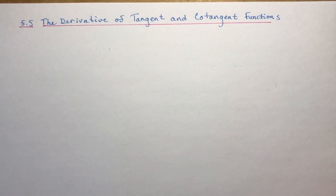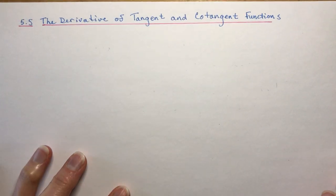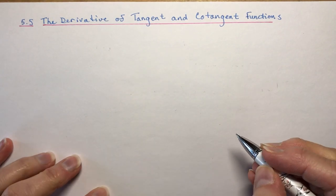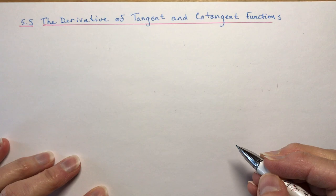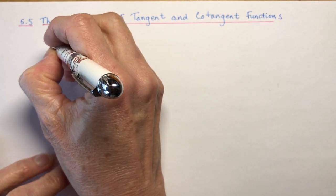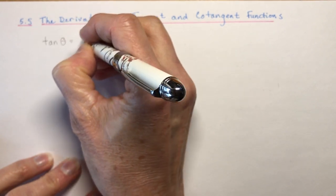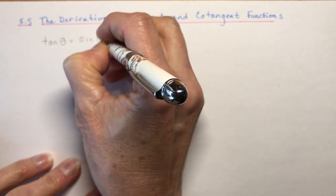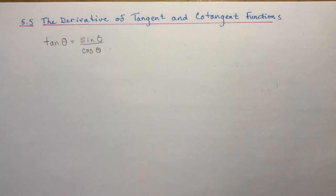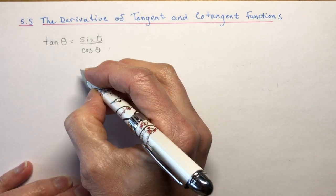Section 5.5 is the last official lesson in the calculus section of the textbook, and it concerns the derivative of tangent and cotangent functions. At this point you already know the derivatives of sine and cosine, so there's no reason why you can't derive the equation for tan θ, since tan θ equals sin θ over cos θ. All we have to do is apply the quotient rule using what we know about derivatives of sine and cosine.